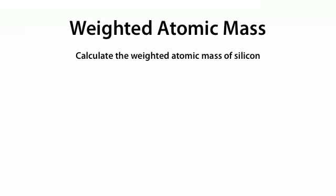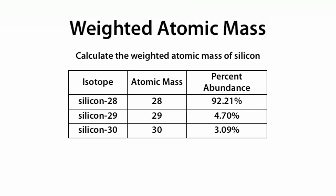Calculate the weighted atomic mass of silicon. We're given a table with three columns: isotopes, atomic mass, and percent abundance. We're given three isotopes of silicon — silicon-28, silicon-29, and silicon-30. Silicon-28 has an atomic mass of 28, silicon-29 has an atomic mass of 29, and silicon-30 has an atomic mass of 30.